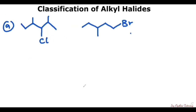We are asked to classify these two compounds as either primary, secondary, or tertiary. If we look at this compound here, you can see that there is a carbon there, and this is the main carbon bearing the halogen. It's attached to a carbon here, one carbon here, and another carbon here — that is two carbons. Since it's two, this is obviously a secondary alkyl halide.